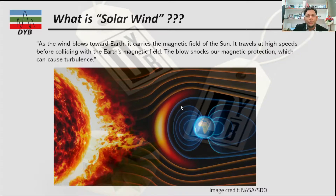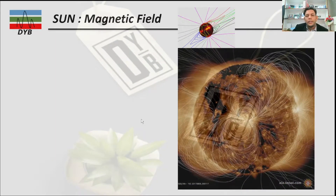What are the sources of the solar wind? The solar wind is produced because of the magnetic field of the Sun. So let's understand the magnetic field of the Sun first.